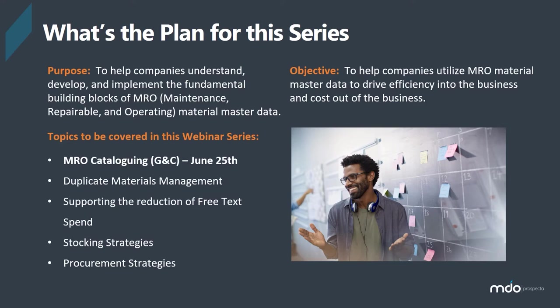First off is cataloging. How do I catalog a material? What's the right way to do it? Dictionaries, taxonomies, noun modifiers, UNSPSC, ISO standards — all these things can be very confusing and overwhelming. So we'll try to put some structure around that today and some thought process to help you.